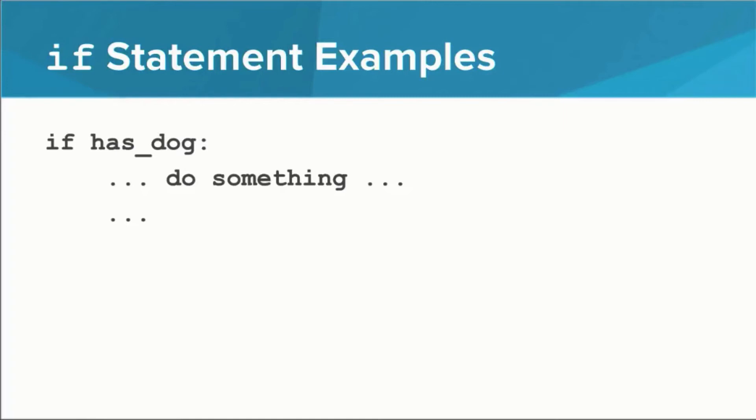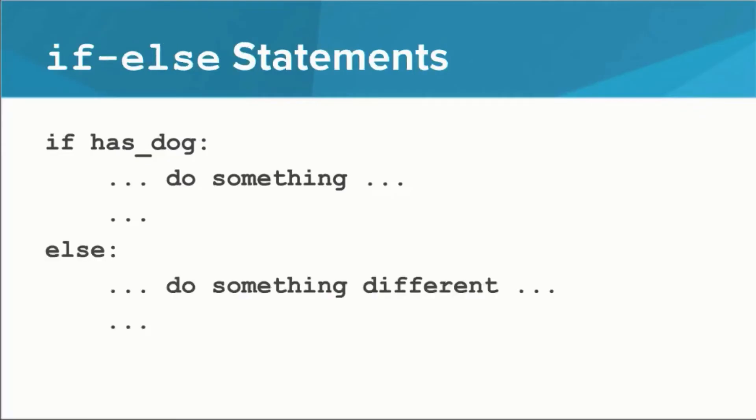What if we want to do something different if hasDog is false? We can use a more complex type of if statement that looks like this. We stick the word else and a colon after our original if statement, and then we include lines of code that specify what should happen if hasDog is false.